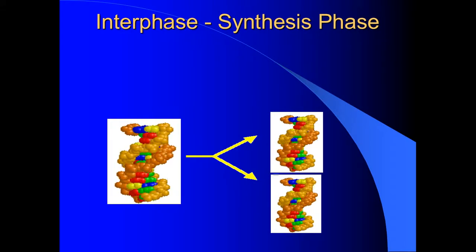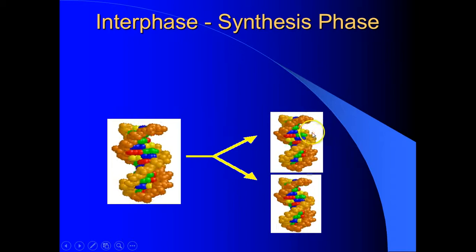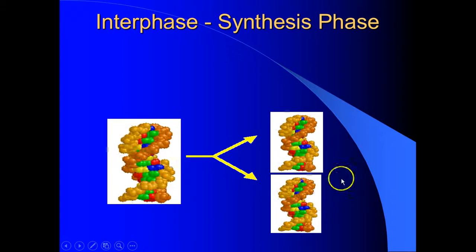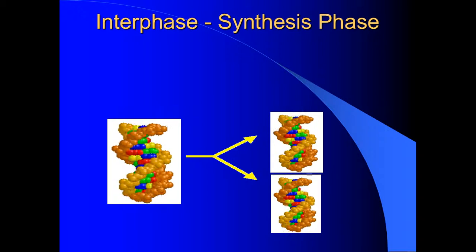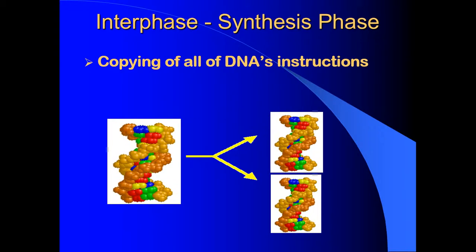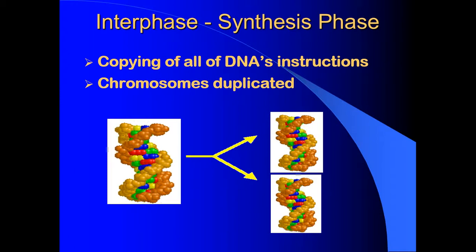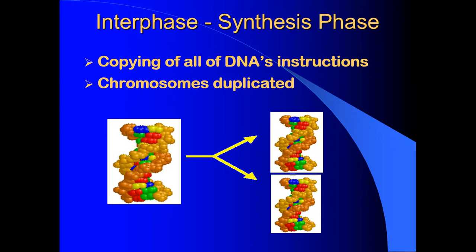The next sub-phase of interphase is the synthesis phase. Synthesis means to make, and it's called synthesis because in this phase your DNA makes a copy of itself. All of the DNA's instructions are copied so they can be passed on to the new cell. Chromosomes are also duplicated, meaning made double.